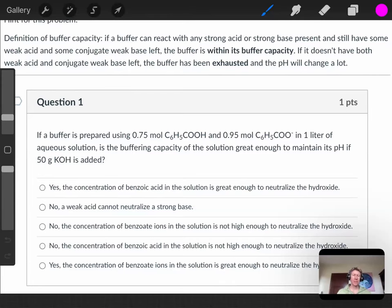This one asks about a buffer that is prepared using 0.75 moles of benzoic acid, C₆H₅COOH, and 0.95 moles of benzoate ions. We can see that they're only different by a single H+, which means this is a conjugate pair, which means this is a buffer.